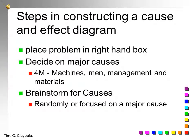The steps in constructing a cause and effect diagram. Place the problem in the right hand box. Decide on the major causes. Traditionally, there are the four M's. That is, machines, your equipment, the men, your workforce, the management system and the quality of the materials. And you can brainstorm then for the causes. These can be done either by focusing on a cause in turn or by randomly allocating them around the system.